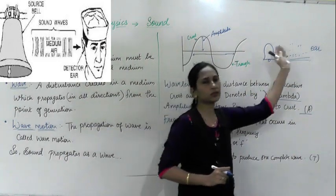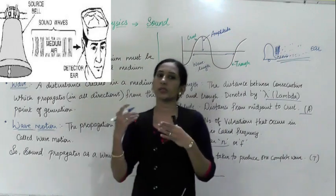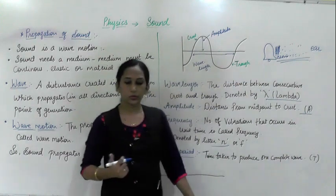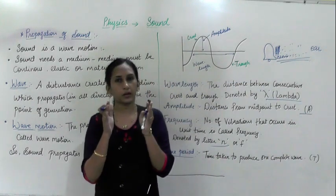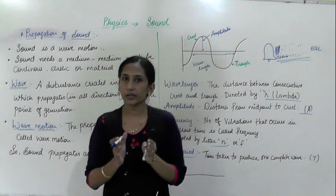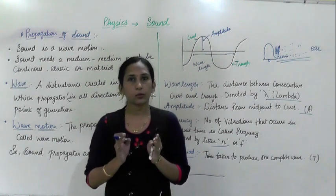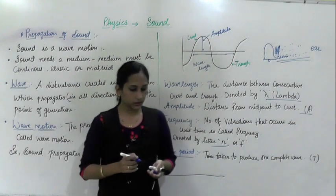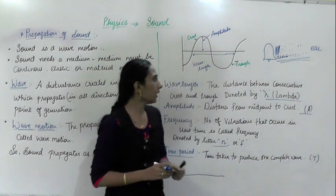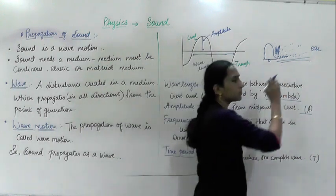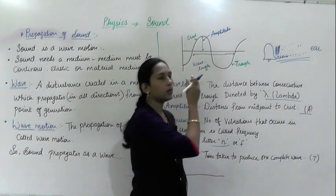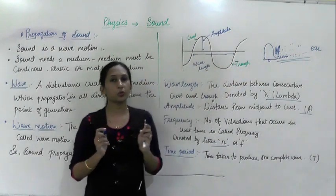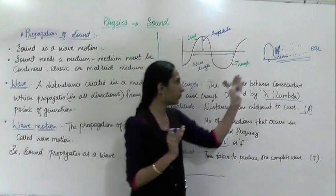That was a simple explanation of how sound travels through the air medium. Now, density means: if more air molecules are present, the density is high; if fewer air molecules are present, the density is low. Now instead of one molecule, we are going to consider the density of air molecules — what happens when many are there.